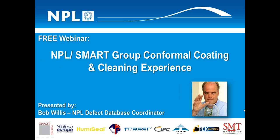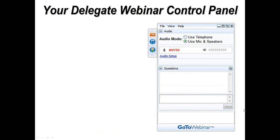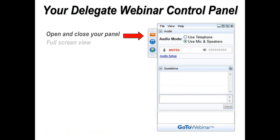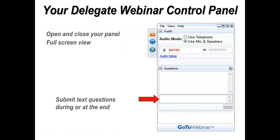Before we start the webinar, I'd like to introduce you to the control panel, which allows you to do a number of things during the presentation. You can open and close the control panel by clicking on the orange button, which prevents it from obscuring your view of slides. You can click the blue button to make the image go full screen. If you want to ask questions, type them directly into the control panel as indicated by the red arrow.